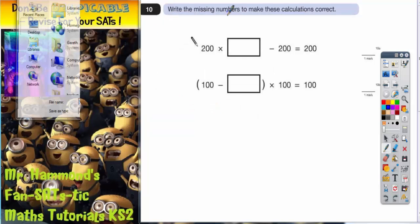Question 10. Write the missing numbers to make these calculations correct. Well on the first one we've got 200 multiplied by a mystery number, subtract 200, gives us 200.